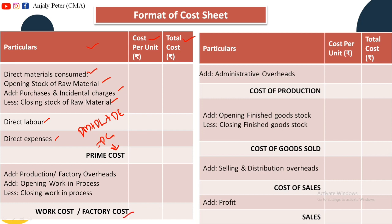Then we get Factory Cost, also called Work Cost. We add Administration Overheads to get Cost of Production. Next, we add opening stock and subtract closing stock of finished goods to get Cost of Goods Sold. Then we add Selling and Distribution Overheads to arrive at Cost of Sales, and then add Profit to get Sales. This is the simple format of the Cost Sheet.